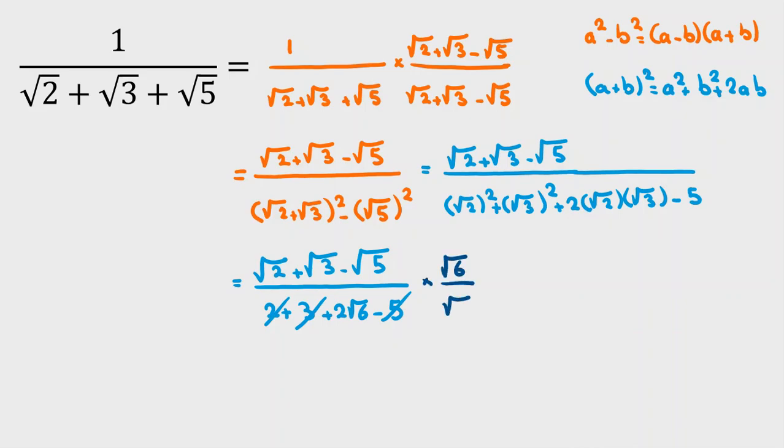So, I multiply both numerator and denominator by root 6. Denominator will be 2 times root 6 times root 6 is 2 times 6, which is 12. And the numerator will be root 2 times root 6 is root 12, plus root 3 times root 6 is root 18, minus root 5 times root 6 is root 30. So, it is our answer.